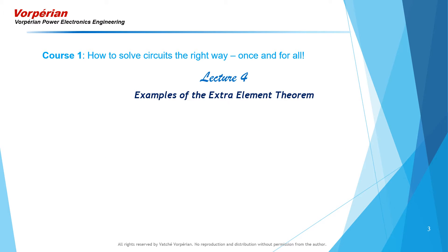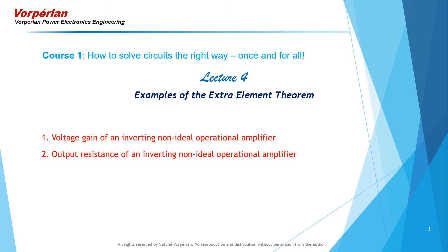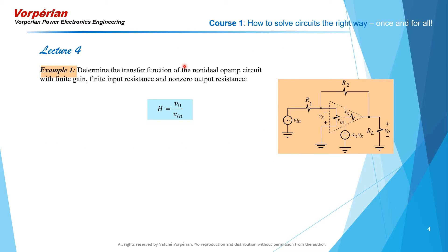In this video, I'm going to work out the example of the voltage gain of an inverting non-ideal operational amplifier and its output resistance. Here is the equivalent circuit diagram of the non-ideal op-amp circuit with the non-ideal components Rn, R0, and A0. We want to determine the voltage gain Vout over Vin in the presence of these non-idealities.